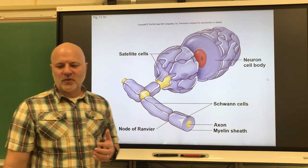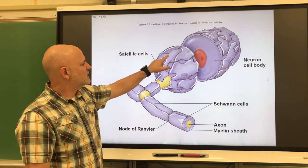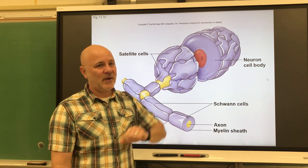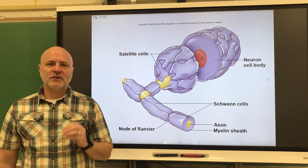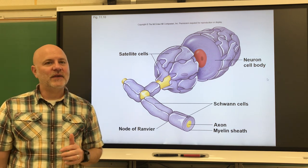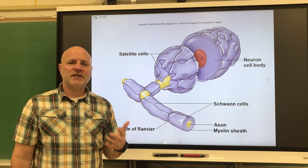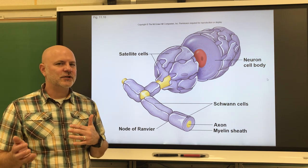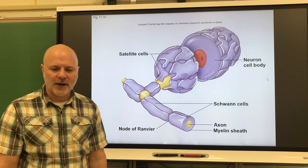Now let's look at the neuroglial cells found in the peripheral nervous system. The first are satellite cells — these surround neuron cell bodies within ganglia, and they have similar functions to astrocytes: transporting nutrients, forming scar tissue, and supporting that area.